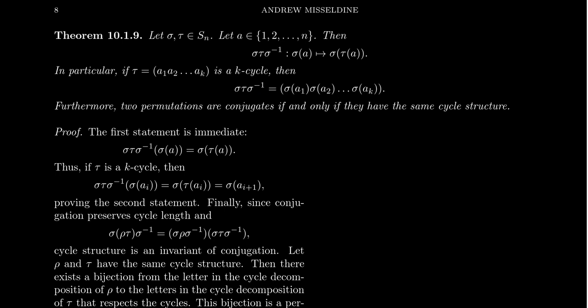The reason why this is super relevant is that furthermore, two permutations are conjugate if and only if they have the same cycle structure. So two permutations are conjugate if and only if their cycle structures are the same. It's pretty cool, and we'll see an example of that just in a second.